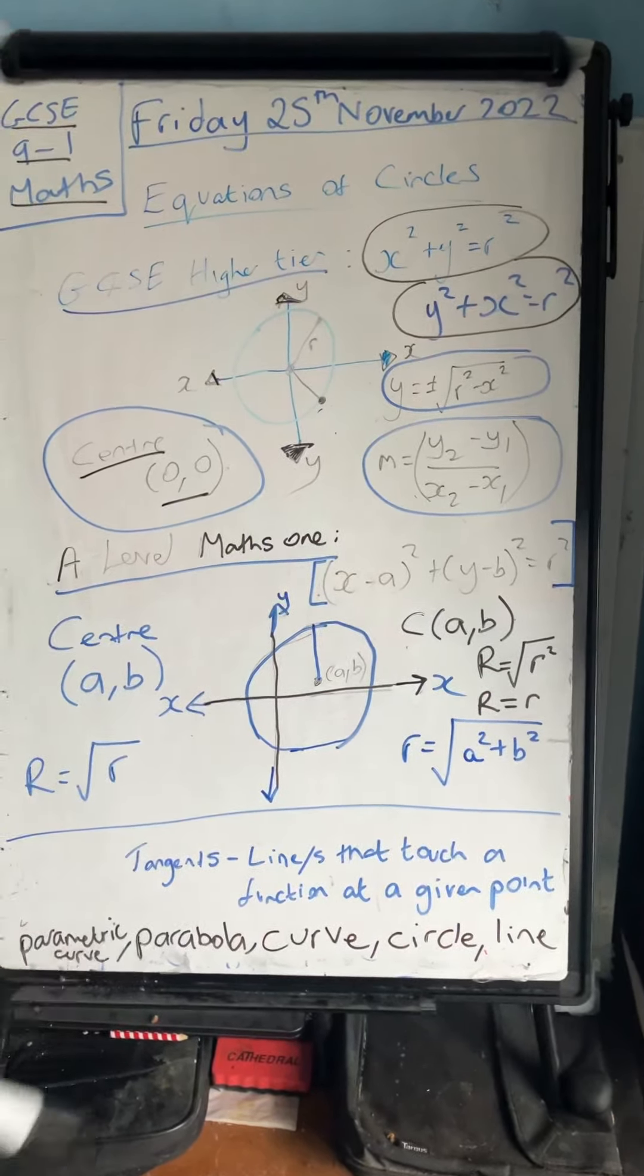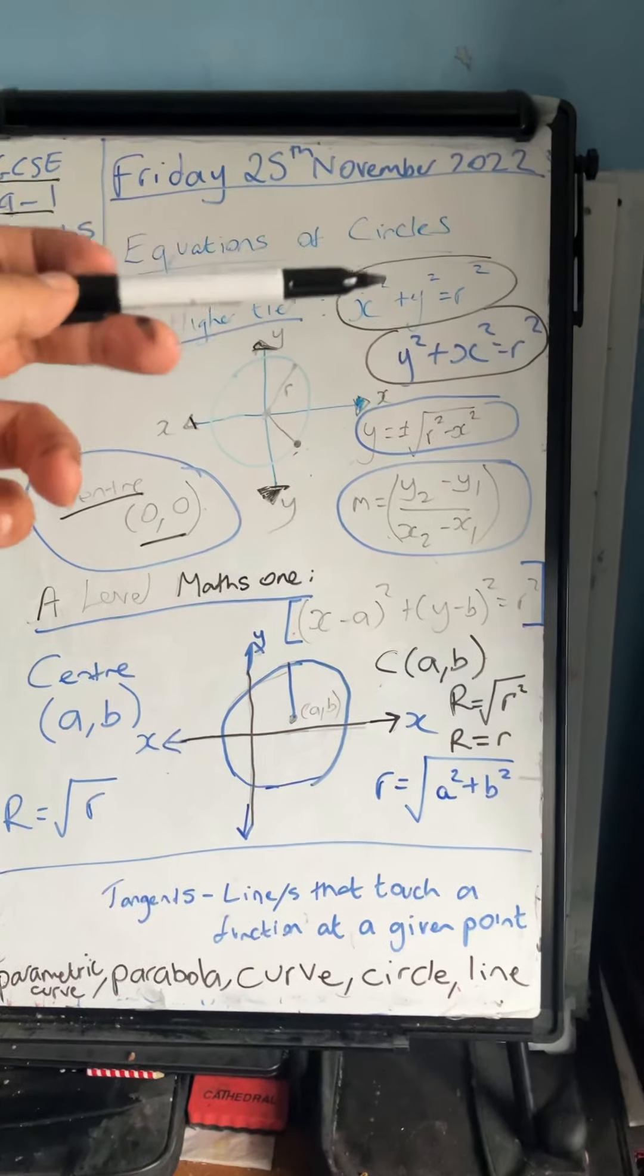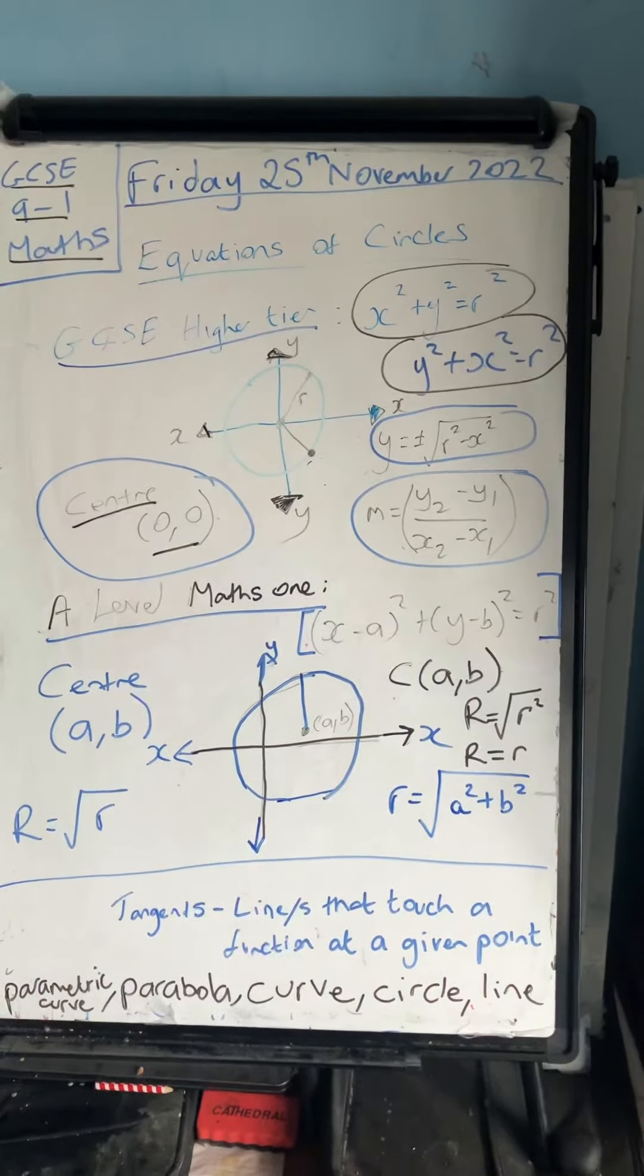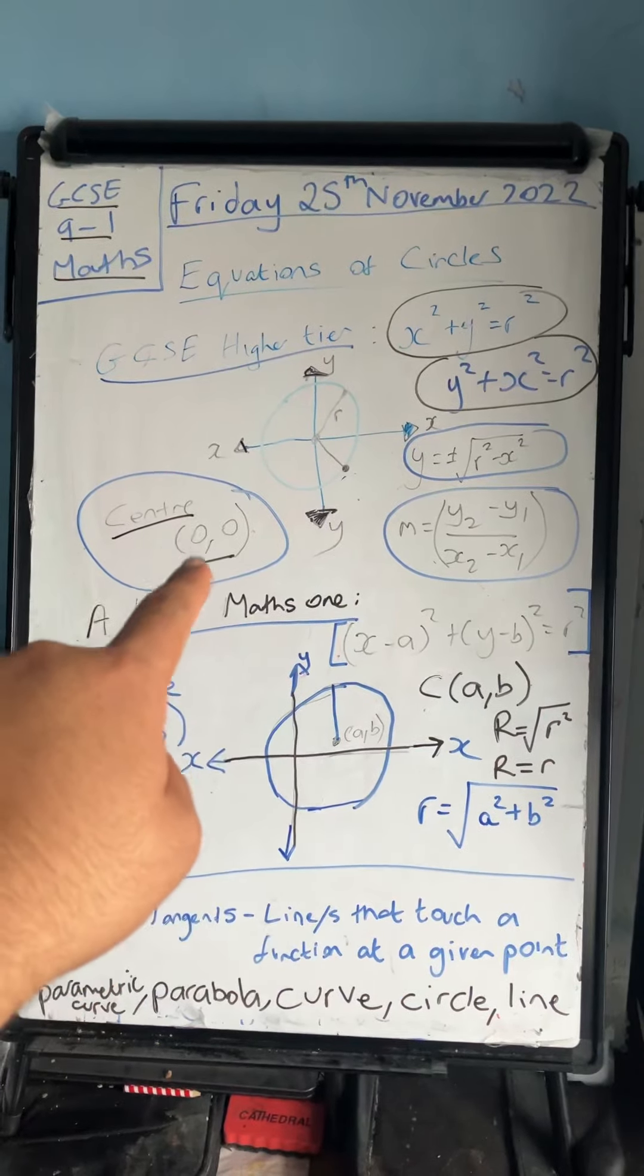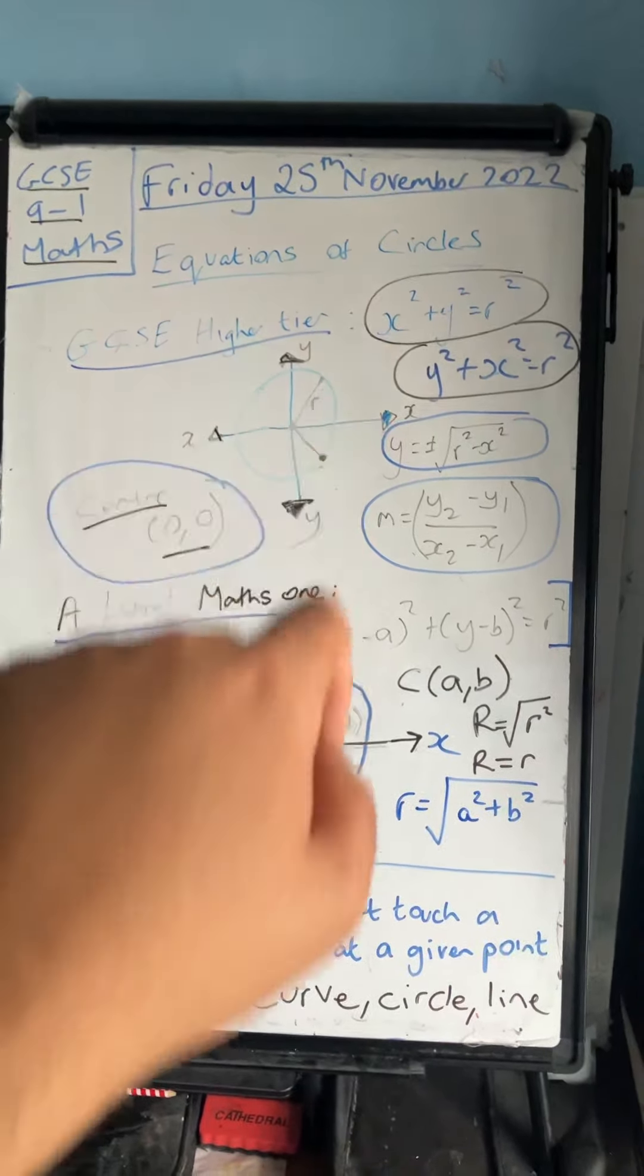For GCSE higher tier, you're going to be given equations of circles in the form x squared plus y squared equals r squared, where the center of the circle is always going to be zero zero if it's in this form, and the radius is equal to the square root of r squared.